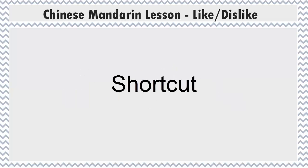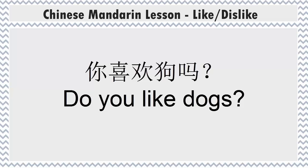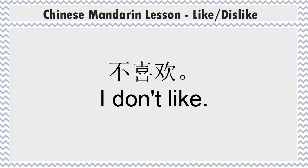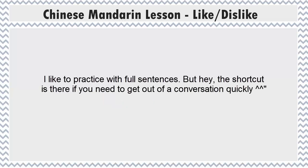Besides answering the question in a full sentence, you can also answer with just 'like' or 'dislike'. For example: 你喜欢狗吗? — 喜欢 (I like) or 不喜欢 (I don't like). As a beginner in learning a language, I always try to go for the full sentence — this way you get as much practice as possible. So instead of using that shortcut, try to answer the questions in a full sentence.